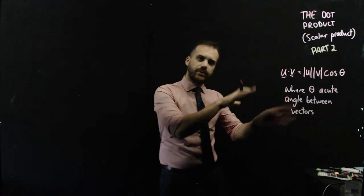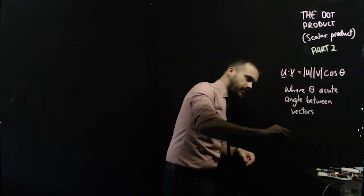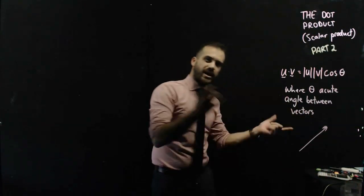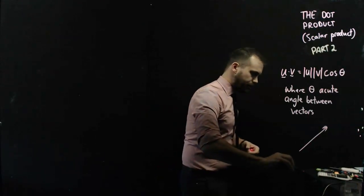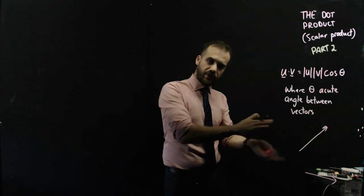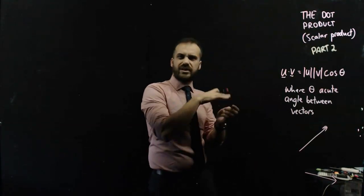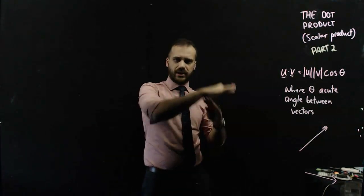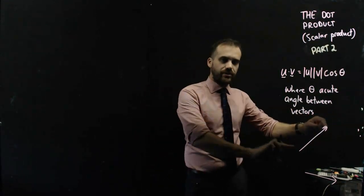Now just think about what that means for a second. We have a vector here, and we might have another vector here. Now I'm purposely drawing them apart from each other, because remember that vectors don't actually have a home, they can move around anywhere, they're just direction and length.